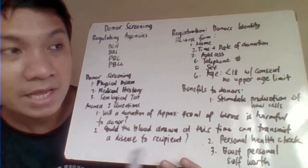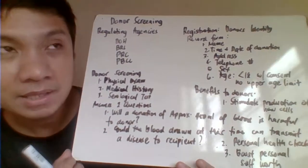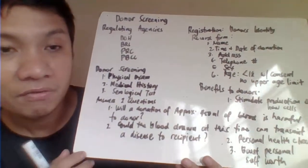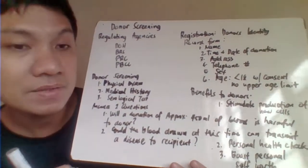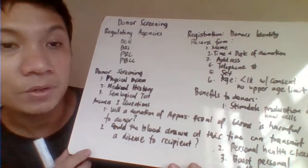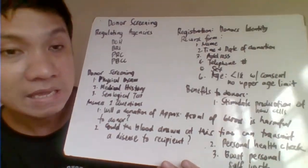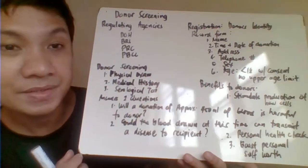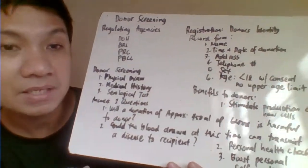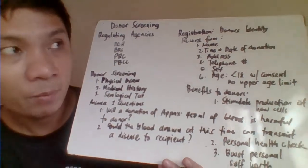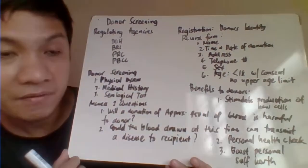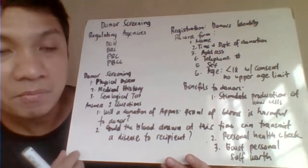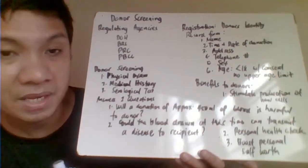The age requirement is ideally the legal age of 18 years old. There is no maximum age for blood donation, but if the patient is less than 18 years old, the patient can still donate blood provided there is consent from a guardian. It is very important to get the personal information of the patient so it becomes part of the record.